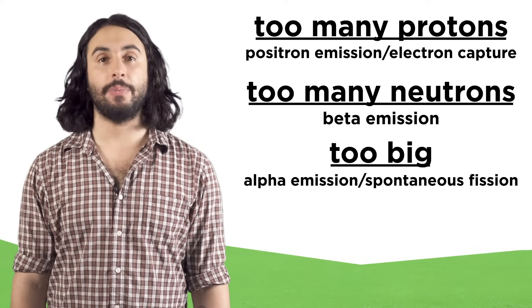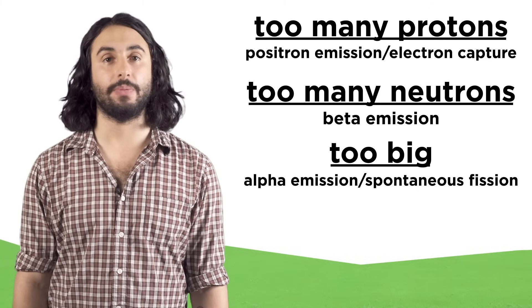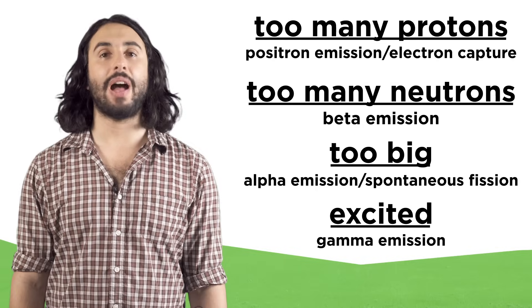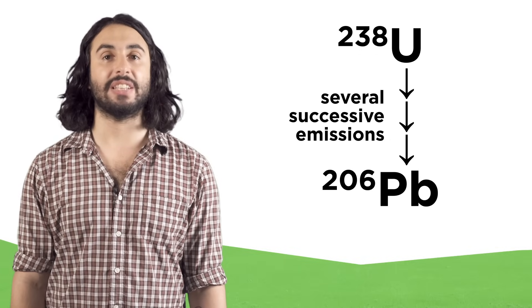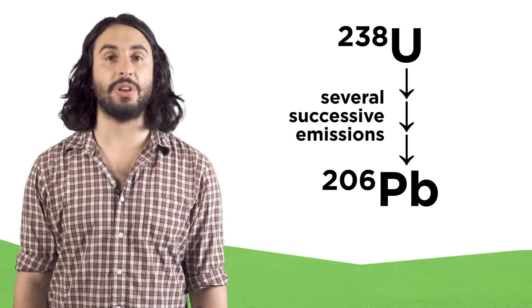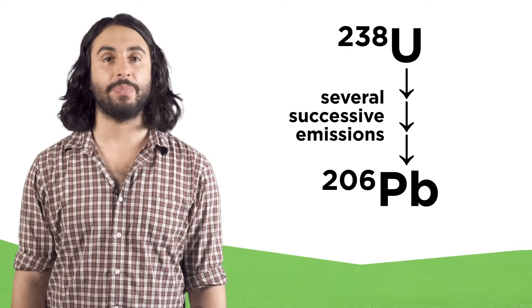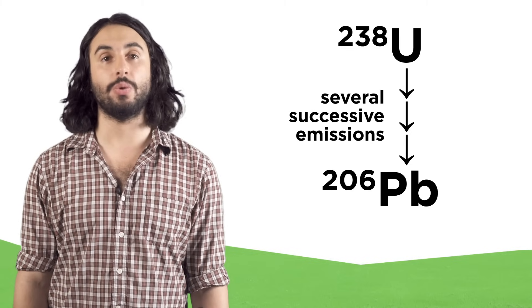Too big: alpha emission or spontaneous fission. Excited: gamma emission. An unstable atom can undergo a radioactive decay series that over multiple emissions generates a stable nucleus, like uranium-238, which eventually becomes lead-206.